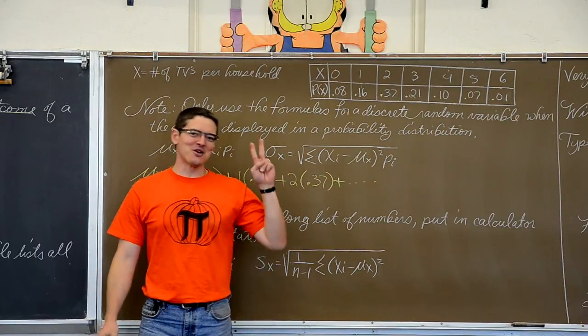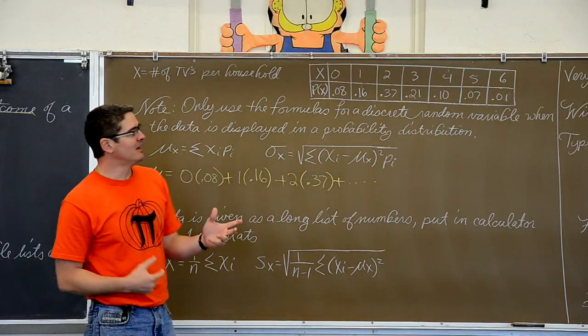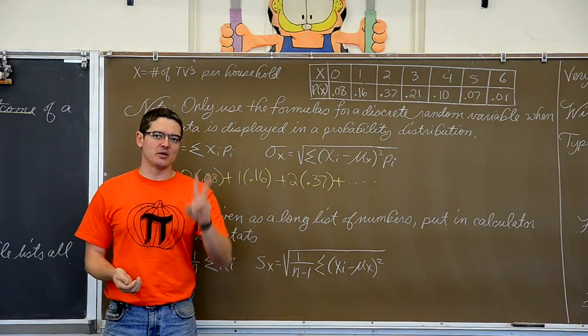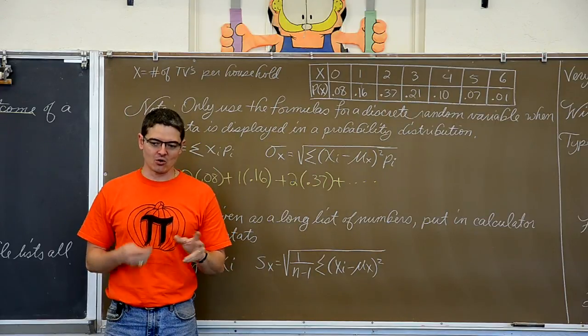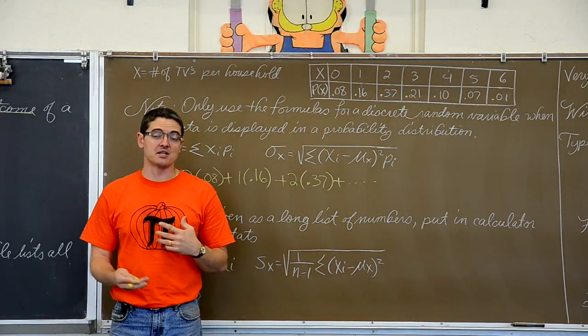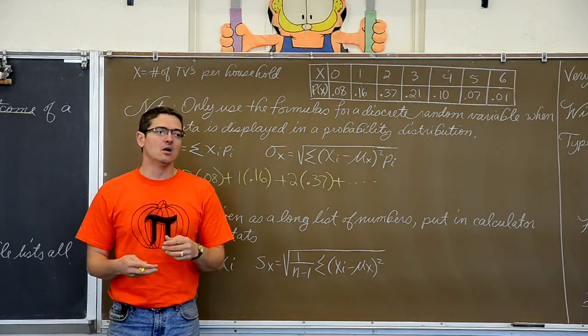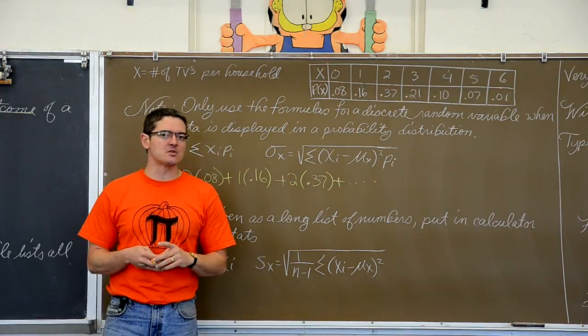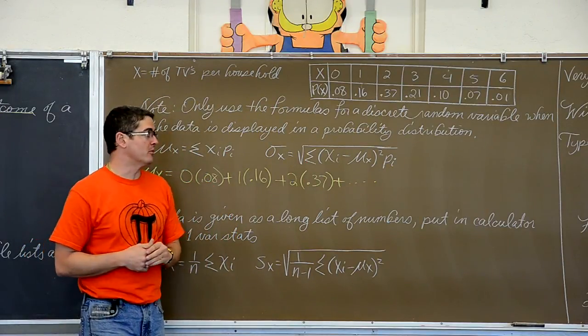BAM! I am Mr. Tarrou. Back from part two of comparing and really defining the differences between the two types of variables that we are going to learn, or the two types of variables we have in statistics: continuous random variables, which granted is most of the type of problems we deal with, and a discrete random variable.